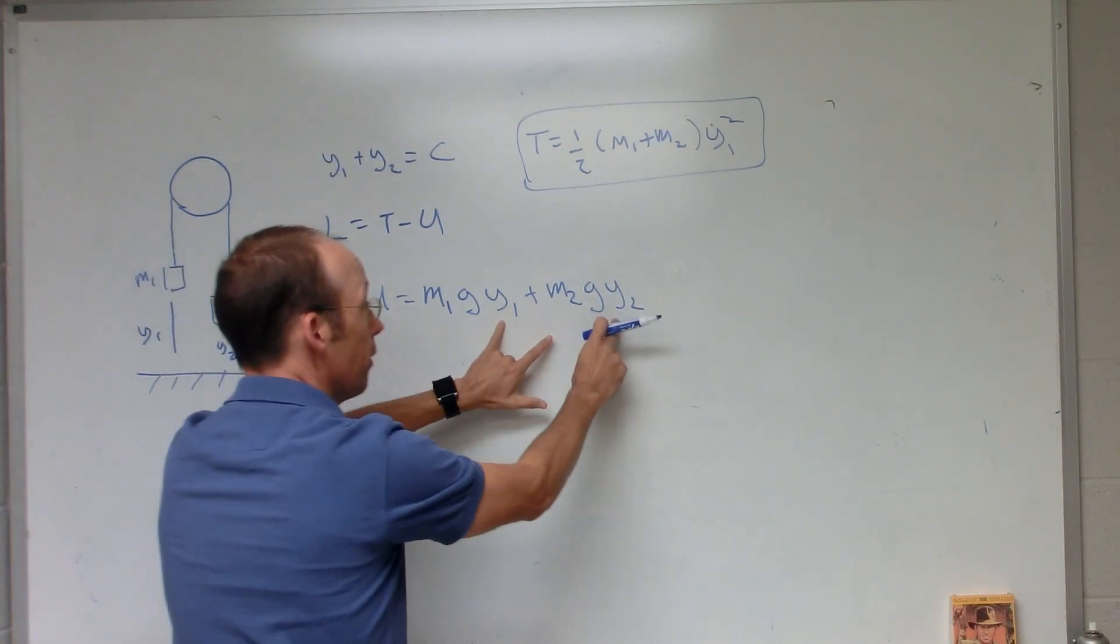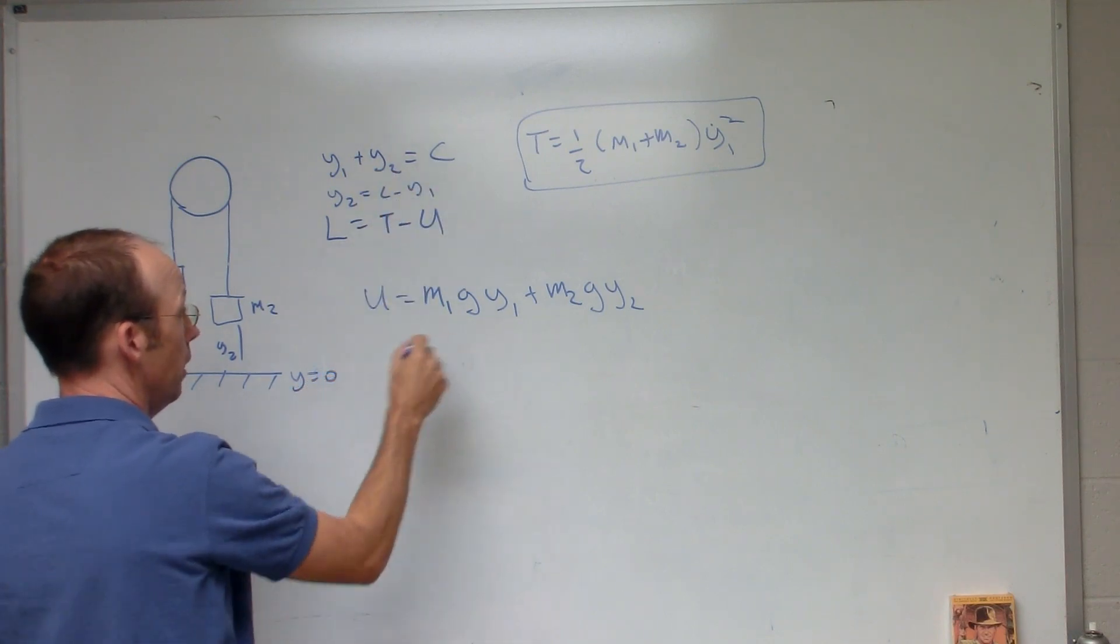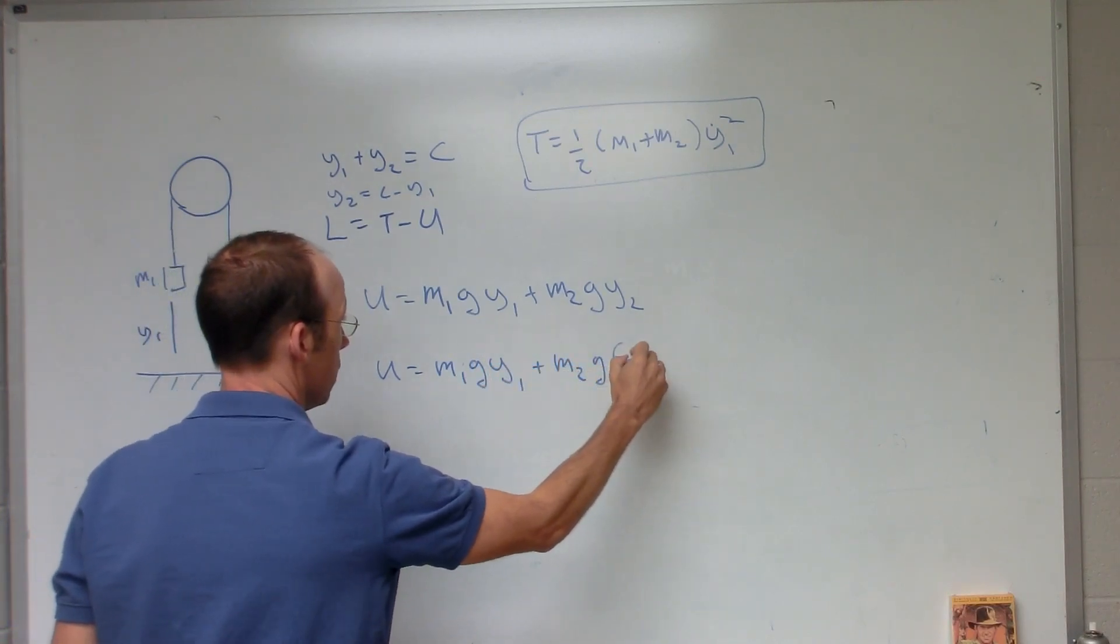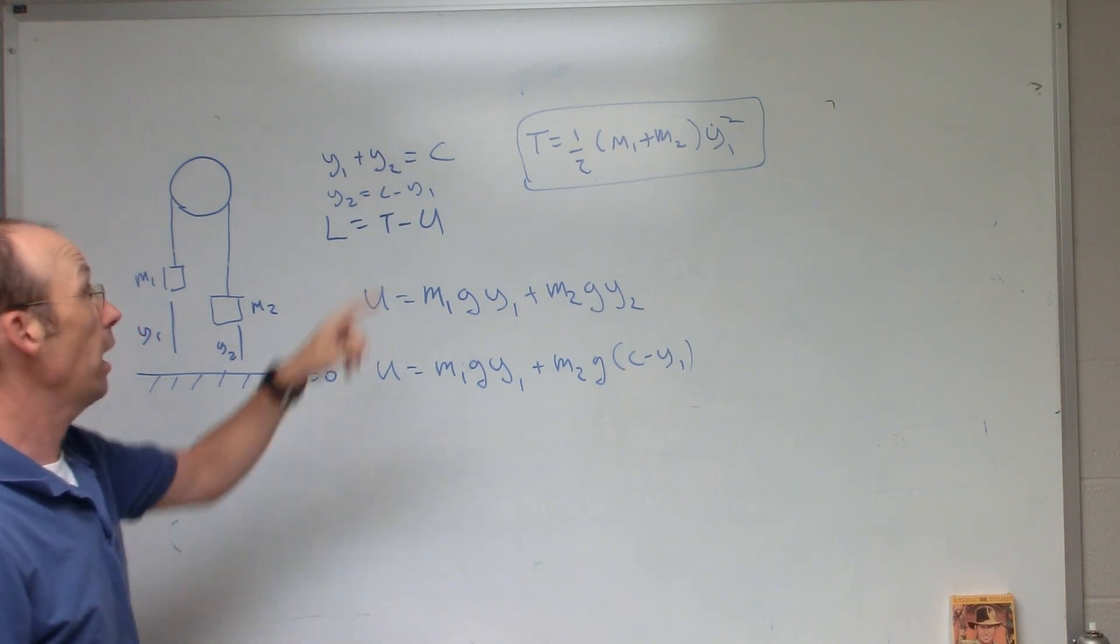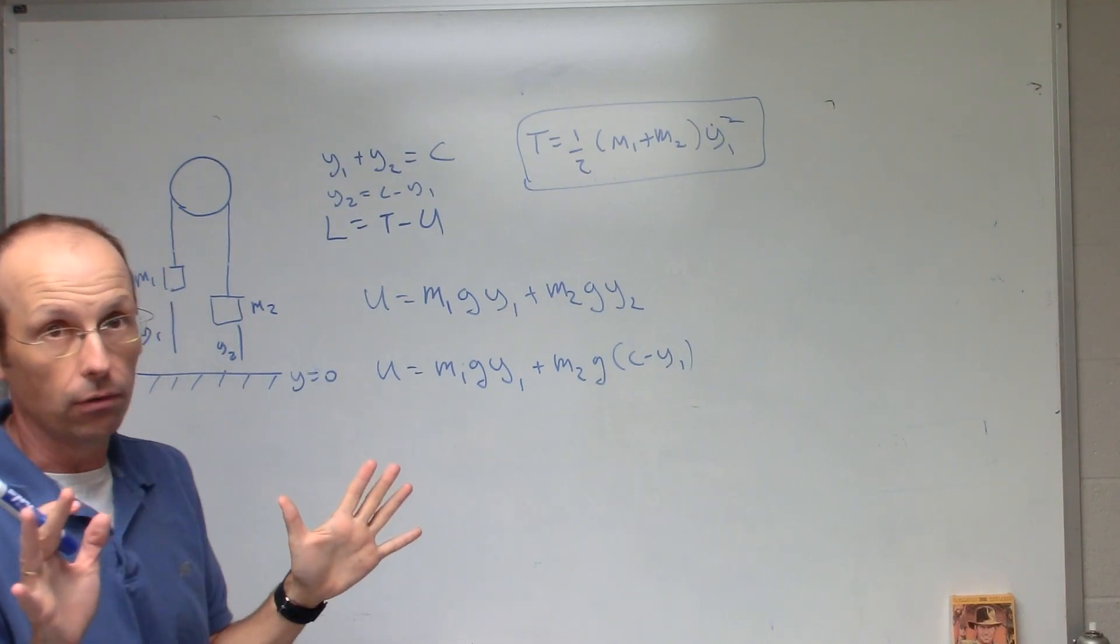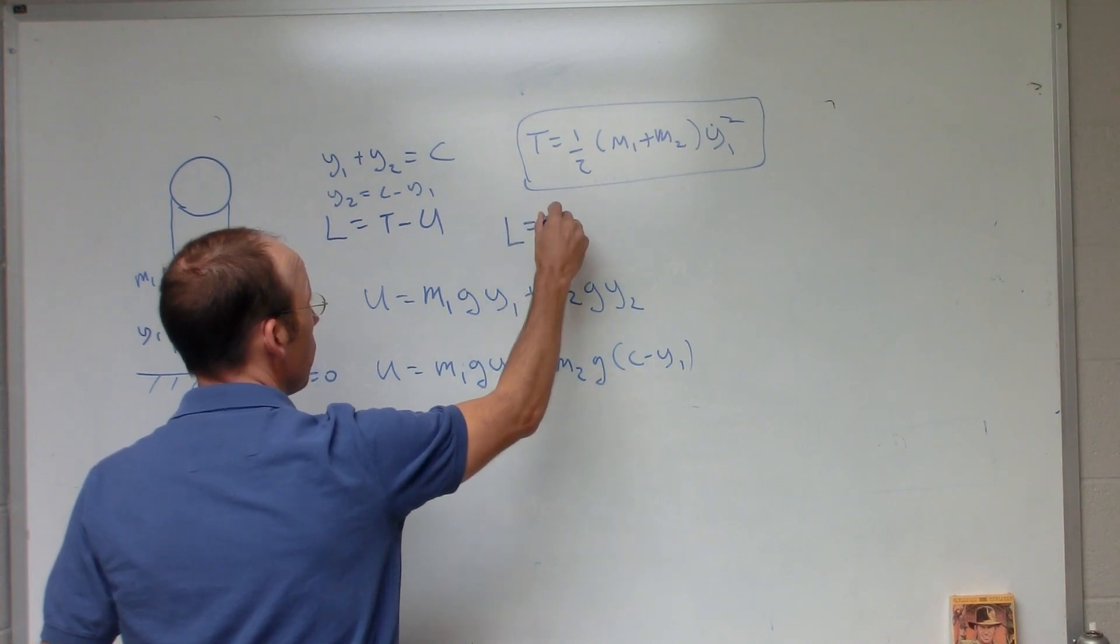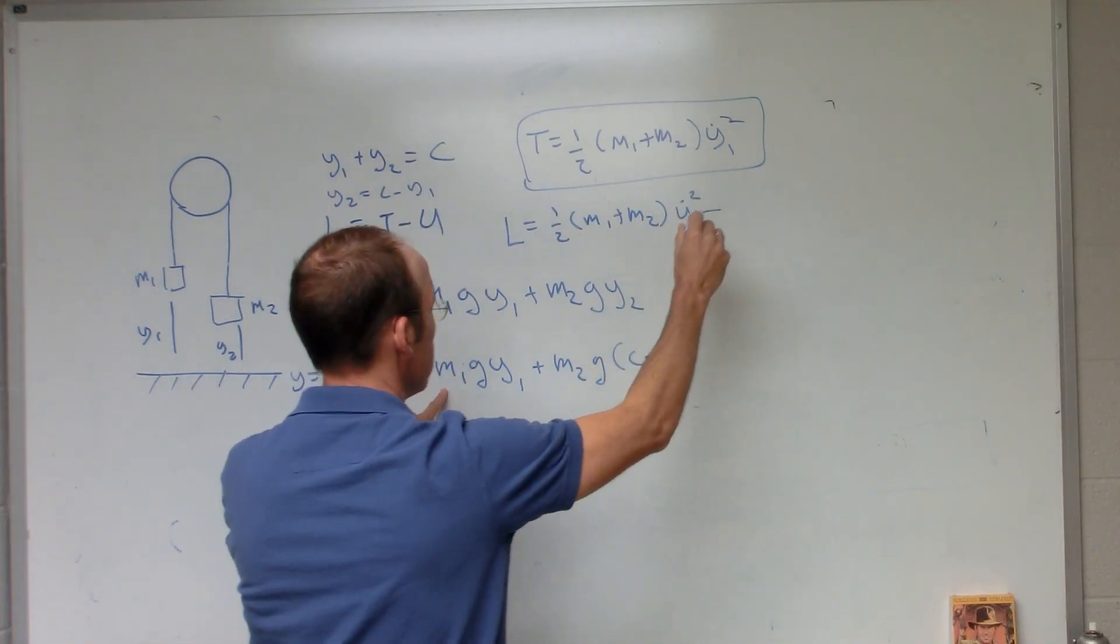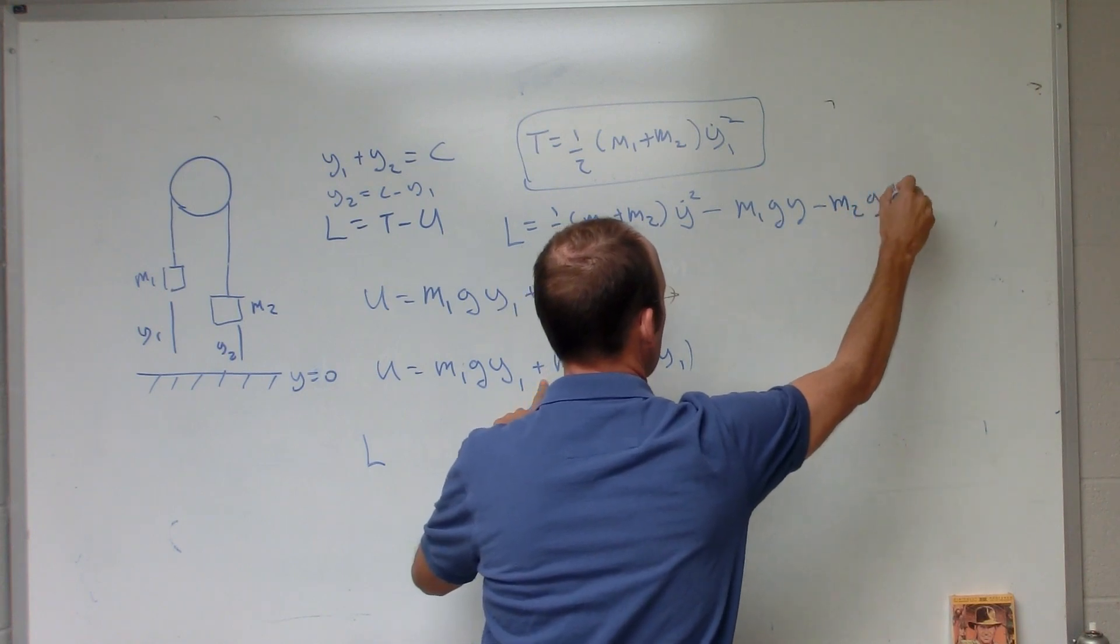But again, I have two variables and I don't want that. I want one. So I can use Y2 equals C minus Y1. So now I have the potential in terms of just that one variable. So I have the kinetic energy in terms of Y dot and the potential in terms of Y. And I'm going to drop the one now because I'll forget it otherwise.